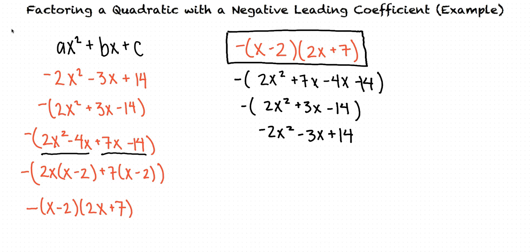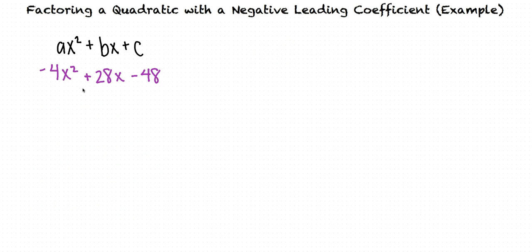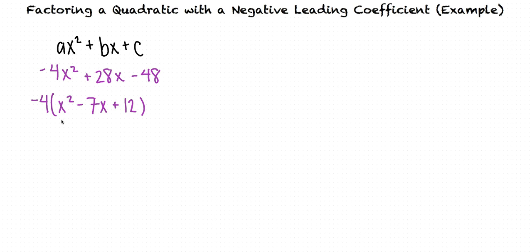Sometimes we'll be given a quadratic expression where we can take out more than just a negative 1 at the beginning. Let's take a look at an example: negative 4x squared plus 28x minus 48. Since this quadratic has a negative leading coefficient, we'll need to take the negative out. But each term can also be divided by 4, so it's best to take a negative 4 out of every term. Now we have negative 4 times the quantity x squared minus 7x plus 12 — a quadratic with a leading coefficient of 1 in the parentheses, which we can factor normally.